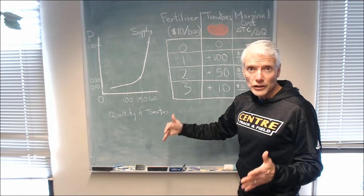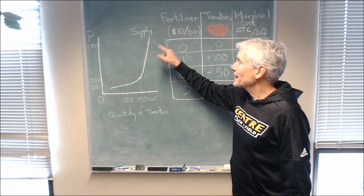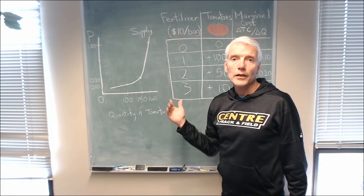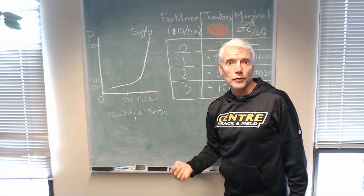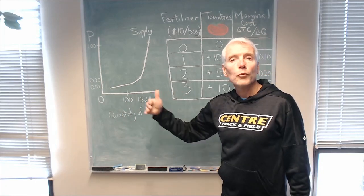But in addition to getting more money, they need more for additional units. They need each tomato to get a higher price than they would if they supplied fewer. And that's because each tomato costs more to produce than the one before it.